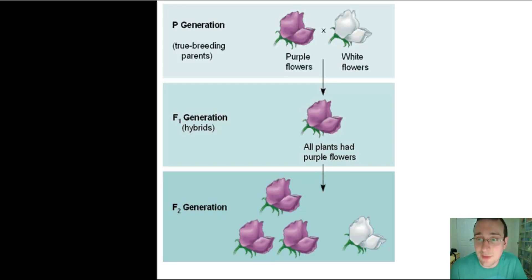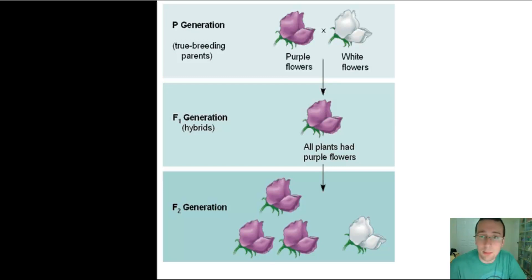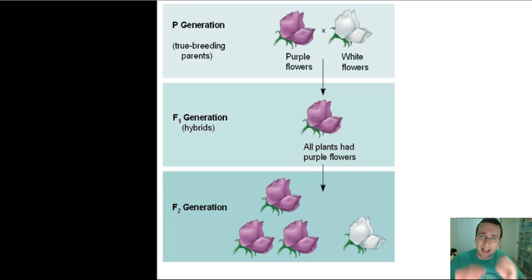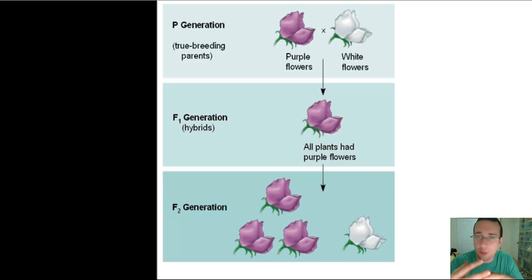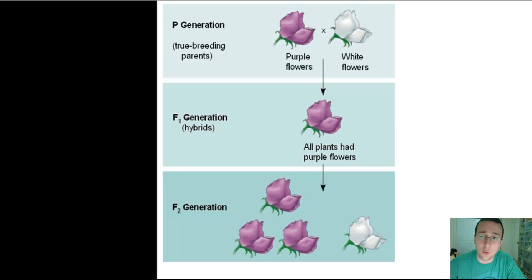Unless you want everybody to look the same — in that case, go with blending. But either way, the law of dominance is figured out at that point. Then he gets the F1 generation and crosses it with itself in the F1 cross to get the F2 generation, where three out of the four look dominant and one looks recessive.